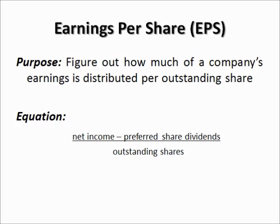The equation to figure out this ratio is the net income of the company for a particular quarter or perhaps the year. You subtract from that amount the dividends paid to preferred shareholders, and then that number is divided by all of the outstanding shares. This gives you how much of the company's earnings are distributed per share owned by investors.